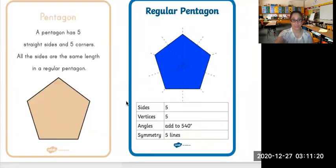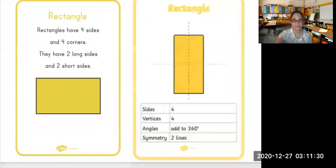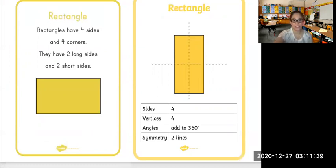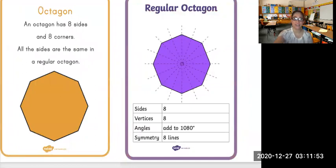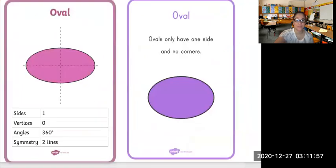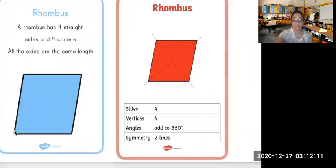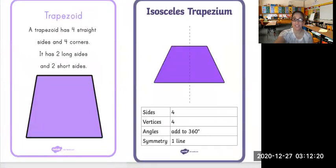This is a pentagon. A pentagon has five straight sides and five corners, and all the sides are the same length in a regular pentagon. This is a rectangle. A rectangle has four sides and four corners — it has two long sides and two short sides. This is a hexagon. A hexagon has six sides and six corners. This is an octagon. An octagon has eight sides and eight corners. This is an oval. Like the circle, an oval also has one side but does not have any corners. This is a rhombus. A rhombus has four straight sides and four corners, and all the sides are the same length. This is a trapezoid. A trapezoid has four straight sides and four corners, with two long sides and two short sides.